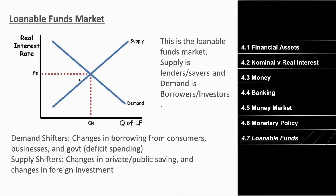Both supply and demand in the loanable funds market can shift. Demand shifts right when consumers need to borrow more, when businesses need capital to expand and take out more loans, or when government deficit spending increases (the government needs more loans to cover expenditures). Supply shifts based on changes in private and public savings, and changes in foreign investment — if foreign investors decrease investment, supply shifts left.